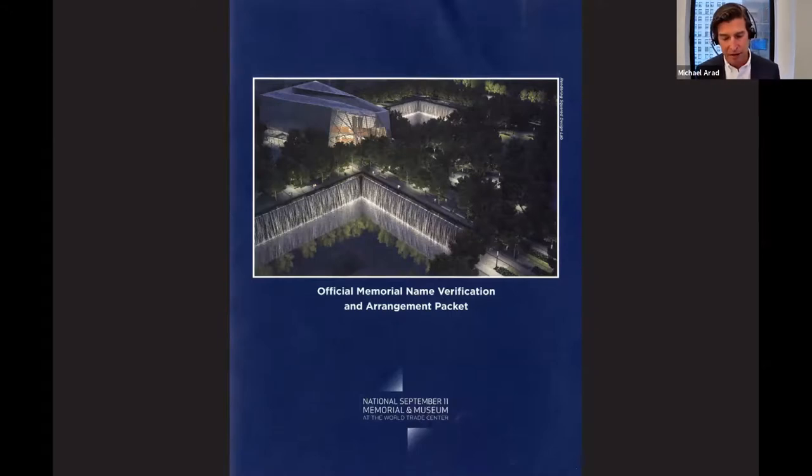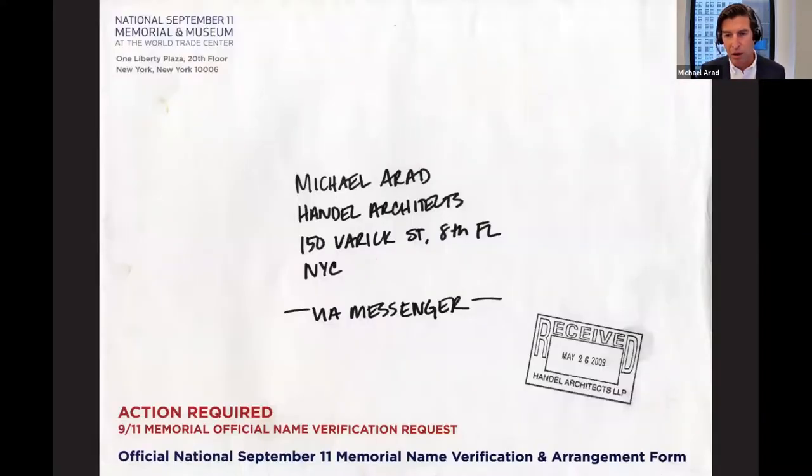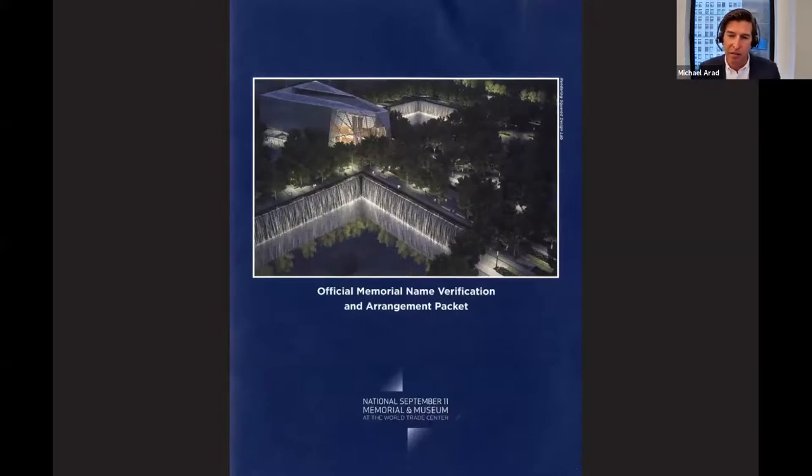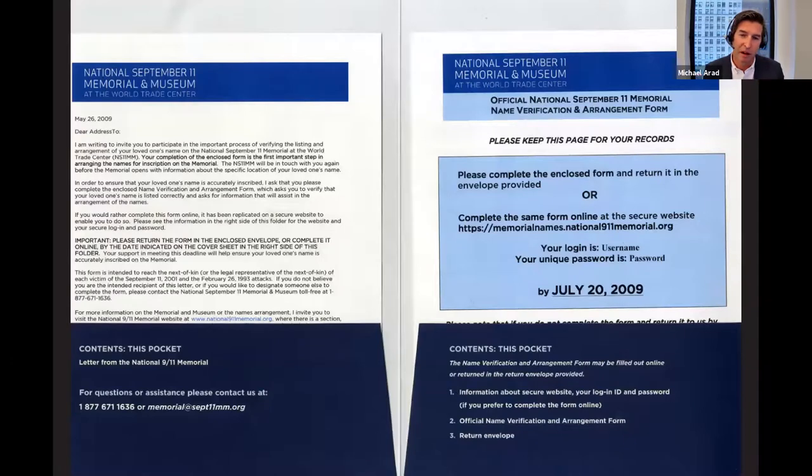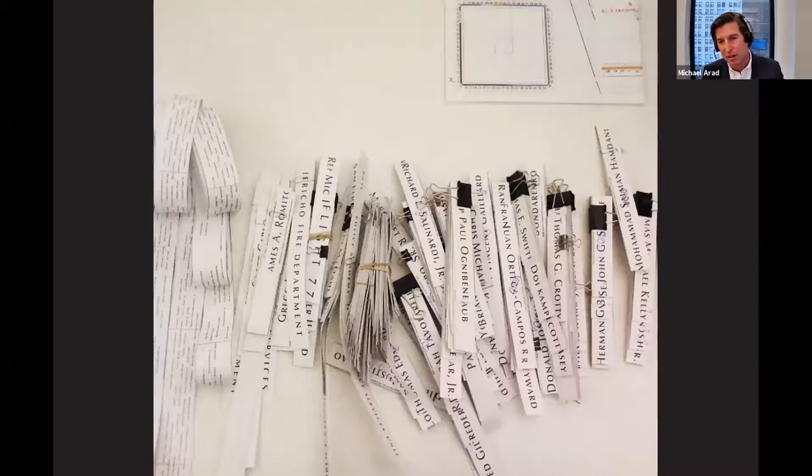When Mayor Bloomberg became chairman of the Memorial Foundation, I met with him again to discuss what we could do about this. And the resolution of that was to arrange the names into nine broad categories, which reflected where people were that day, the four flights, the two towers, the Pentagon, as well as the 1993 bombing victims. But within these groups, based on geography, the mayor was open to the idea of meaningful adjacency. And so in June, I believe it was in June, no, in May, these name verification kits went out to the family members. And we received over 1,200 requests. And it was sort of, well, we knew that each request that we could meet was meaningful, but we did not know how many of them we would be able to request.